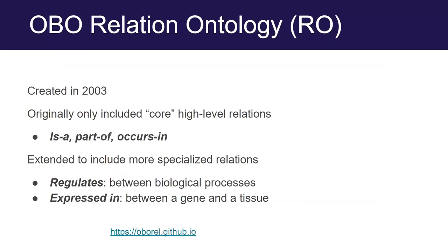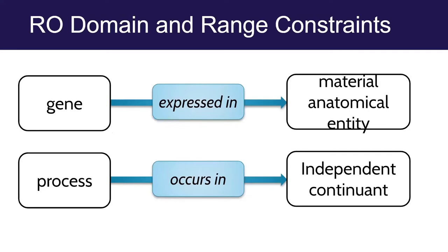The seventh principle was to do with RO, the OBO Relation Ontology. This is one of the earliest OBO ontologies, created officially in 2003, though it had origins a little before that. RO originally had quite abstract, high-level relations usable across multiple domains — 'is a part of', 'occurs in' — for relating biological processes to sub-cellular compartments, as used in GO. It was gradually extended to include more specialised relations, such as 'regulates' connecting biological processes, or 'expressed in' connecting a gene to the tissue in which it's expressed.